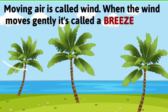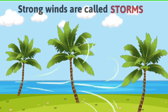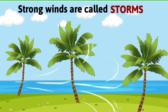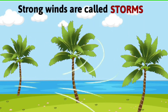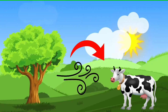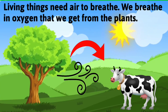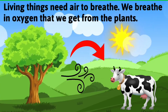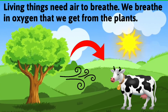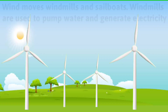When the wind moves gently, it is called a breeze, while strong winds are called storms. Now let's learn about different uses of air. Living things need air to breathe — we breathe in oxygen that we get from plants.